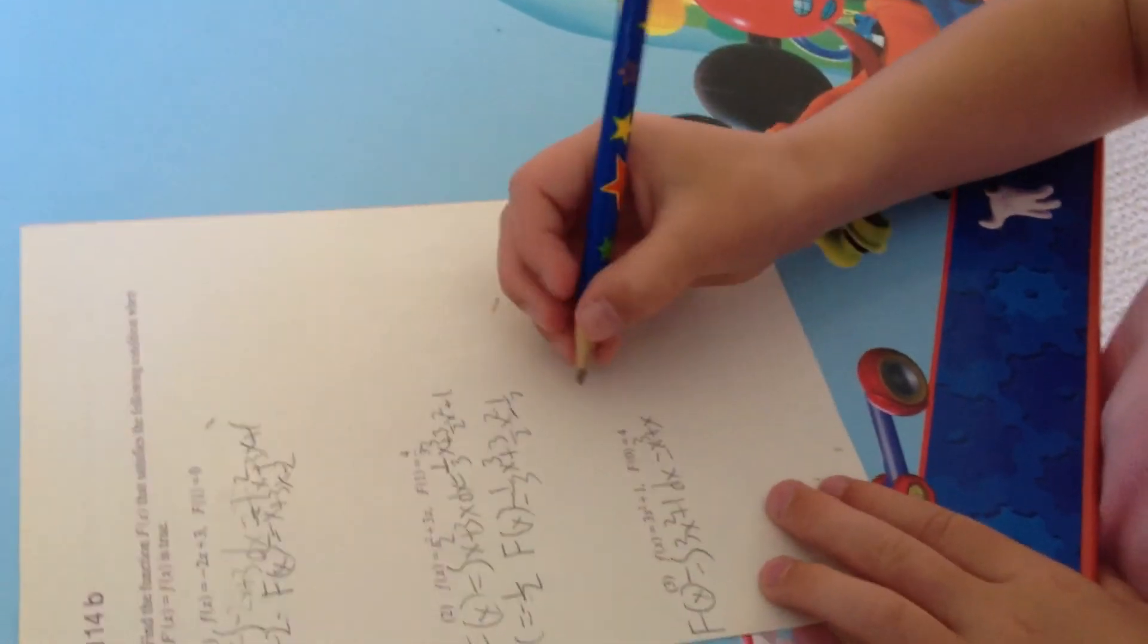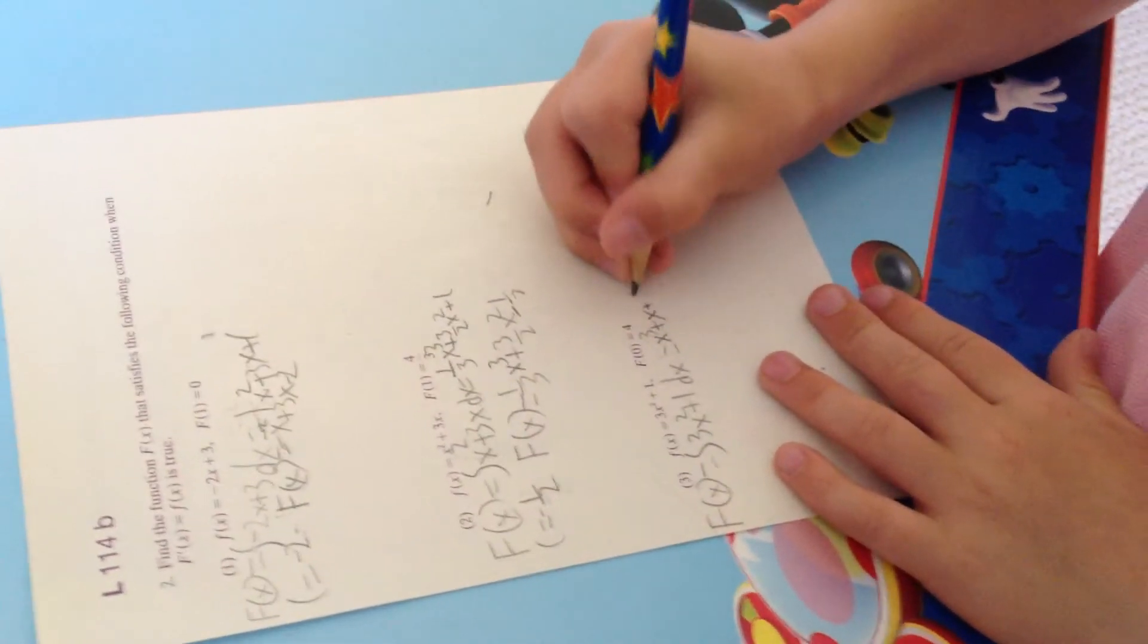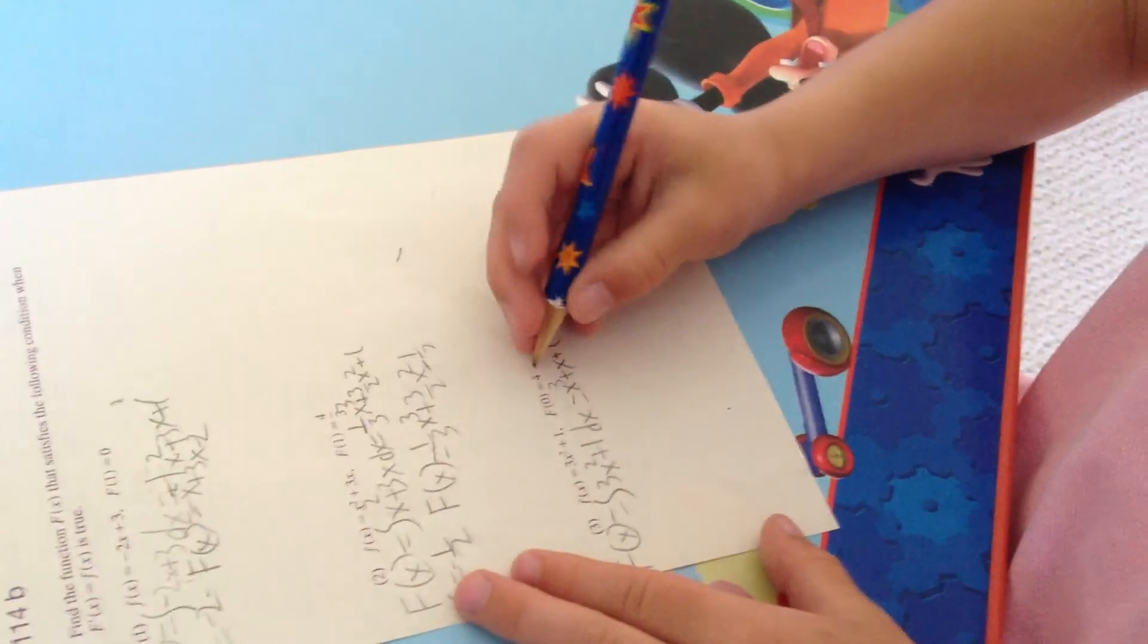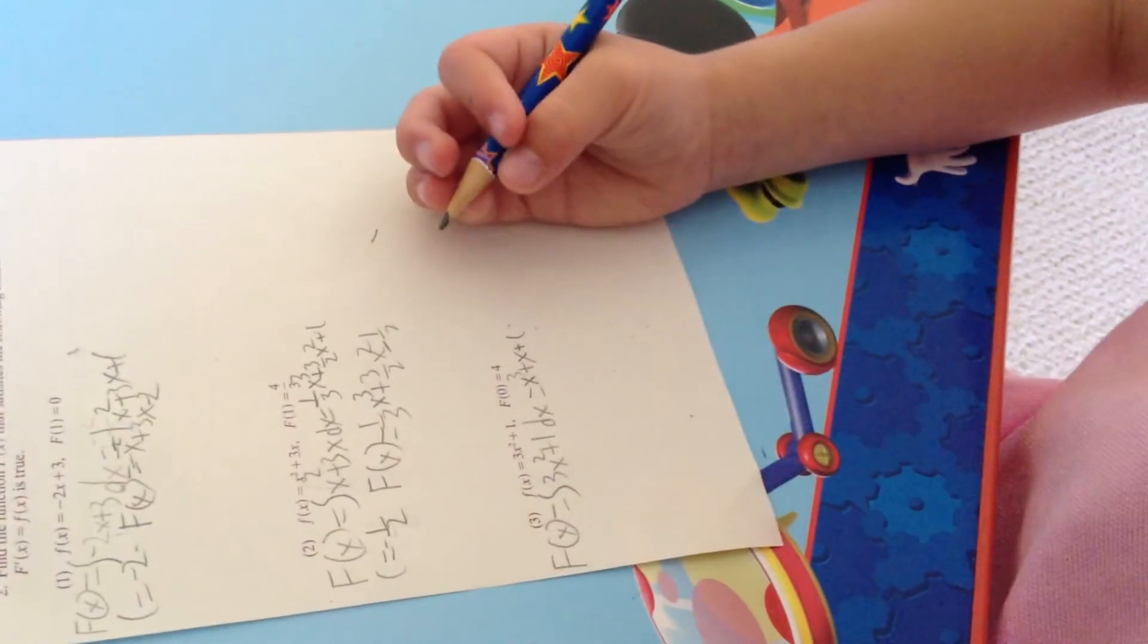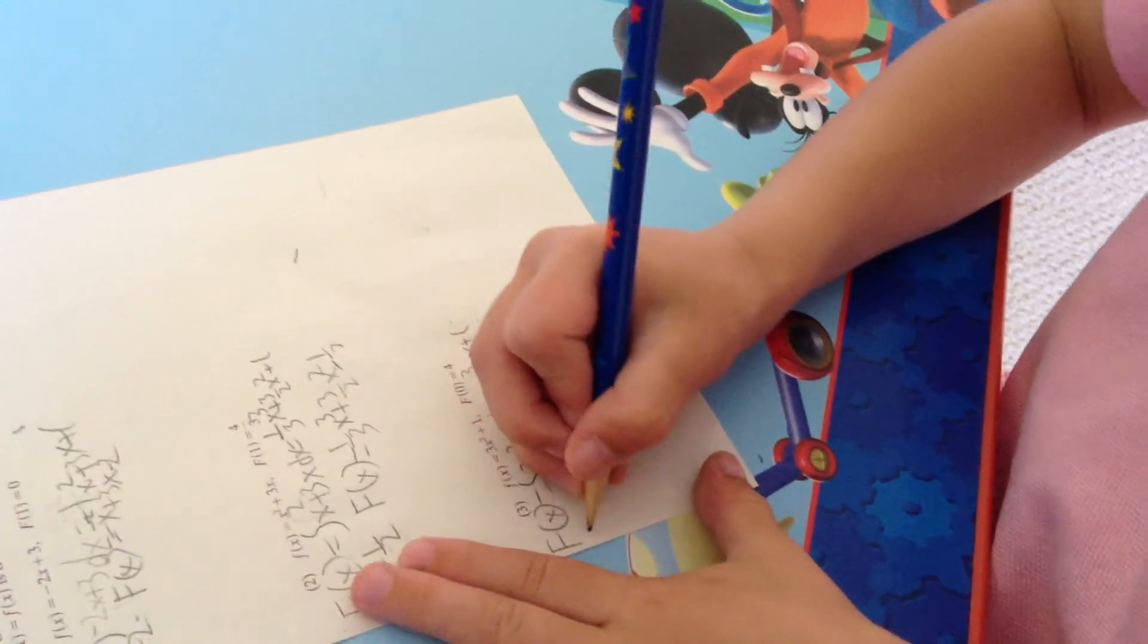So X cubed plus X. Oh, plus D. I almost forgot that. Okay, well... F of 0 equals 4. So 0, 0, C, C equals 4. Okay, so... Hey, yeah. C equals 4. Well, that was easy. Yeah. You did this one pretty fast, huh?